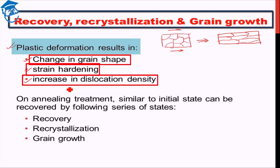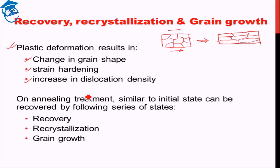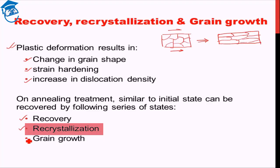There is a treatment known as annealing treatment which tries to undo some of the bad effects of plastic deformation. In annealing treatment, you expose the material to a higher temperature, which leads to increased diffusion processes within the body. This leads to three phenomena: first, recovery will take place; second, recrystallization will happen; and finally, once recrystallization is done, grain growth will take place.